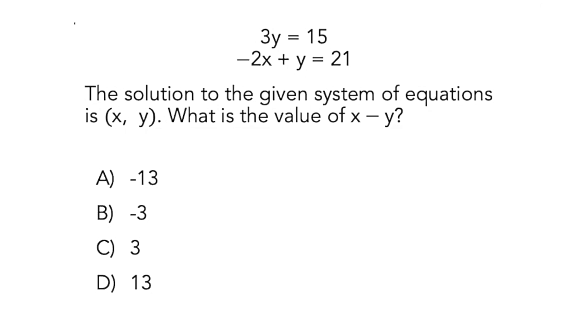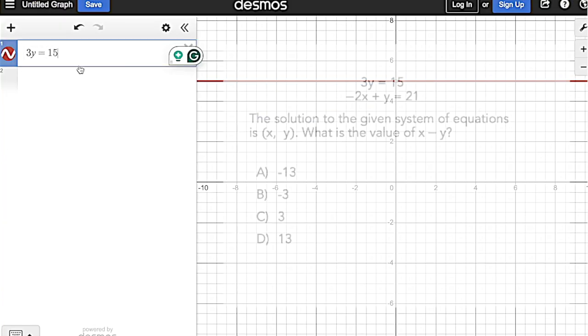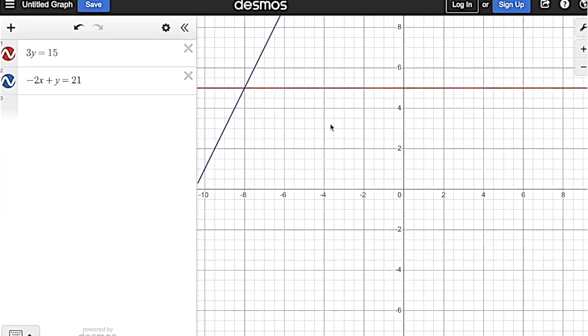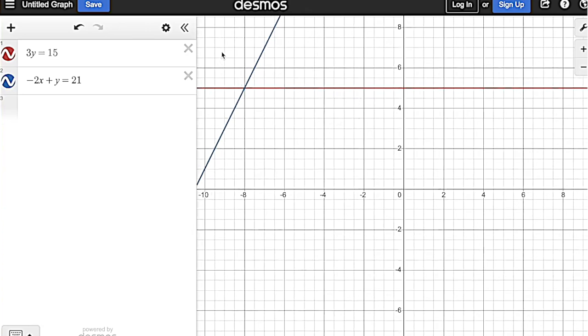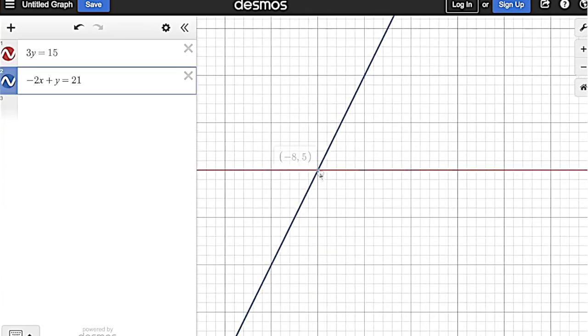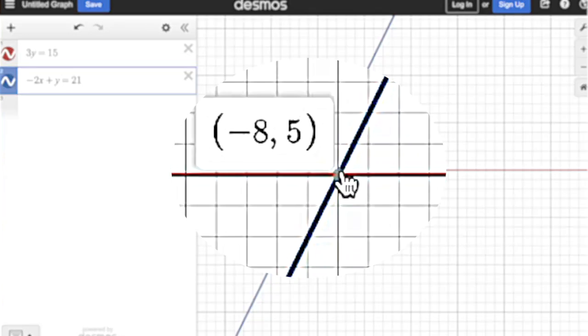Now, we could go through all of the steps on how to solve the systems of equations problems, but you don't even have to know how to do any of those things because of Desmos. So we graph 3y equals 15 and negative 2x plus y equals 21. And again, we're looking for our intersection point. So we look right here. It's a gray dot. And yep, we've got negative 8 comma 5.